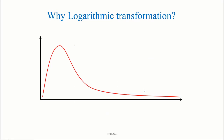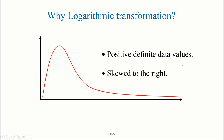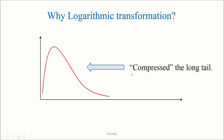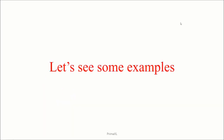Another common method of data transformation is the application of the logarithmic function. The question is, why do we want to do it? Suppose that all of the data values are non-zero positive numbers, and suppose that the distribution of the data values is heavily skewed to the right — meaning the distribution has a long tail extending far to the right. We may want to compress the long tail and make the distribution look more normal, and the logarithmic transformation does precisely that. Let's see some examples.